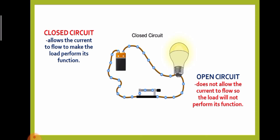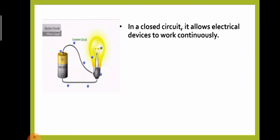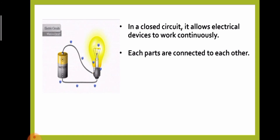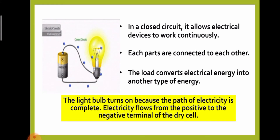The switch helps open and close the circuit. This illustration shows a closed circuit. In a closed circuit, it allows electrical devices to work continuously. Each part is connected to each other. The load converts electrical energy into another type of energy, and the light turns on because the path of electricity is complete.